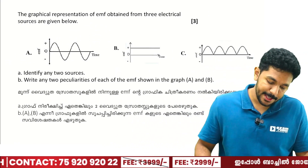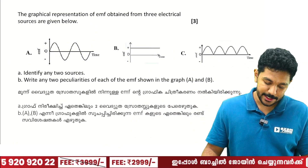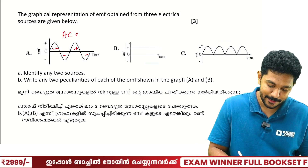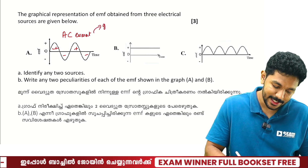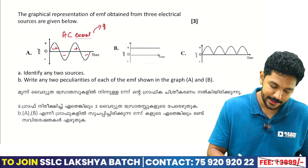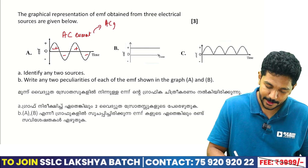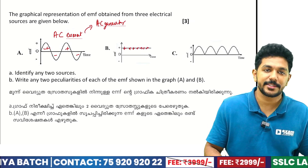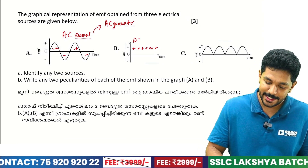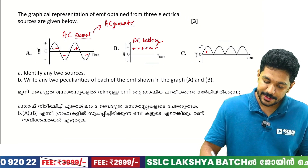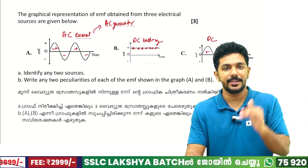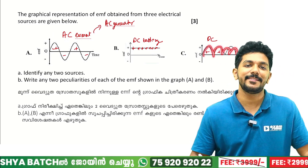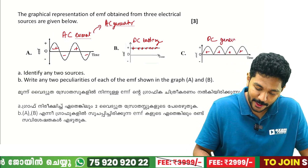The graphical representation of EMF obtained from three electrical sources is given. Identify any two sources. One graph shows alternating positive and negative values — this is an AC generator output. Another shows constantly positive, constant value — this is a DC battery. A third shows constantly positive but varying magnitude — this is a DC generator output.